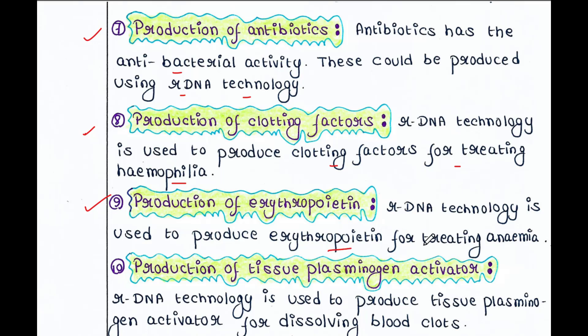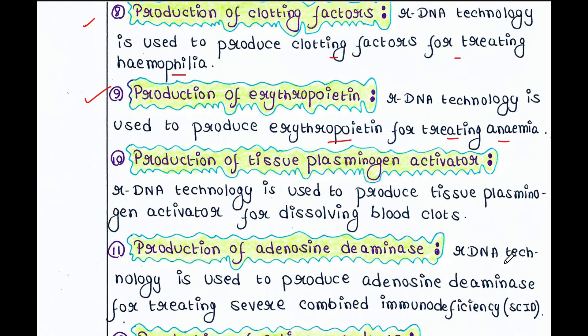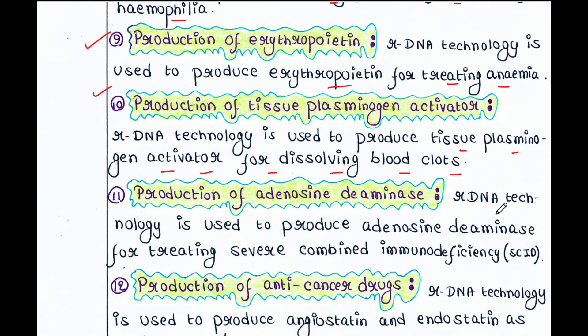Next is production of erythropoietin. rDNA technology is used to produce erythropoietin for treating anemia — we can clone that gene. Next is production of tissue plasminogen activator. rDNA technology is used to produce this tissue plasminogen activator for dissolving blood clots — again, we can clone this gene.